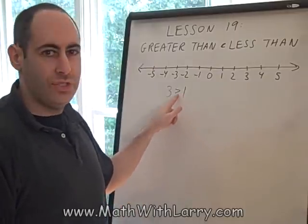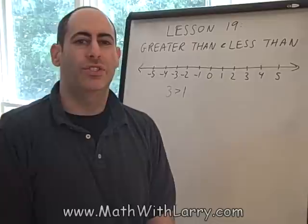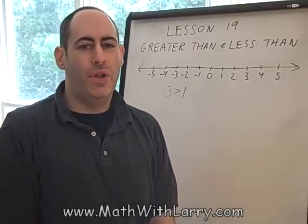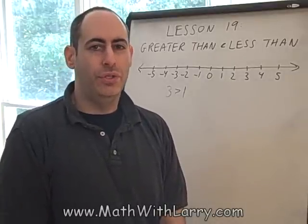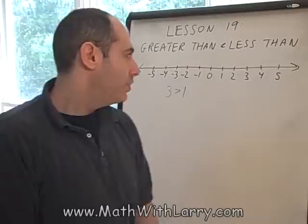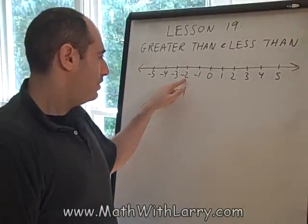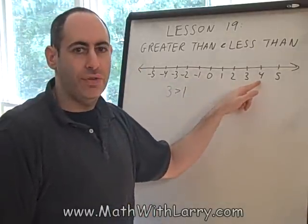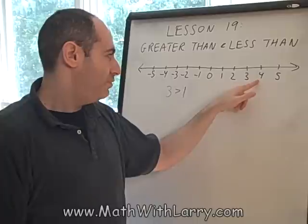We would read that as 3 is greater than 1. In a moment, we'll get back to this symbol and talk more about that. Let's take a look at another example. I want to know if negative 2 is greater than 4. We're going to find those numbers on the number line. Here's negative 2 and here's 4, and of course when I say 4, I mean positive 4.